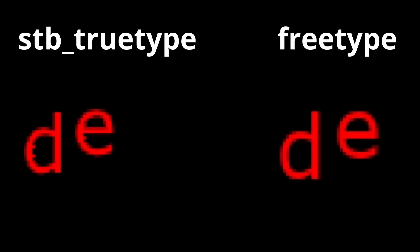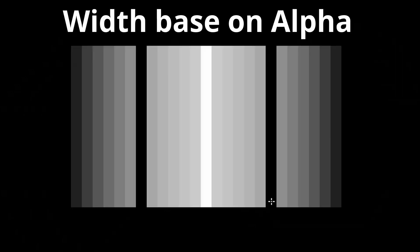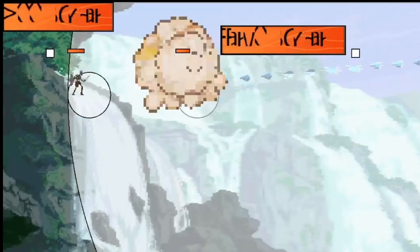Luckily a hero in chat pointed me towards a different way of doing fonts: signed distance field font rendering. Basically what you do is take the glyphs and generate decreasing alpha values the further you get away from the middle. You define a width and what is called an edge transition: everything included within the width of the character has a value of one, and from the width up until the edge transition the alpha value blends from one to zero.